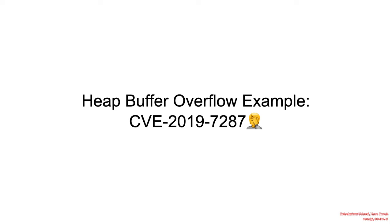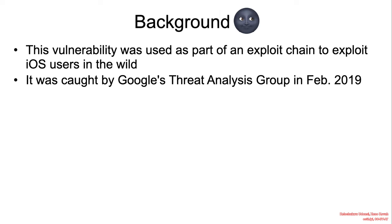The face palm emoji used to identify this vulnerability almost accurately describes what we're about to witness. This vulnerability was used as part of an exploit chain to exploit iOS users in the wild, and it was caught by Google's TAG Threat Analysis Group in February 2019.